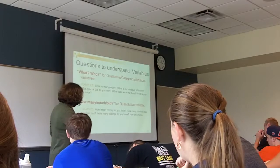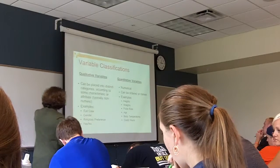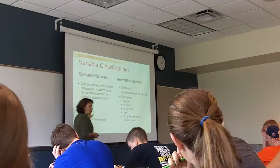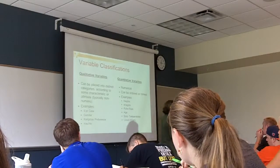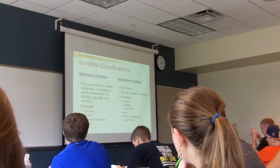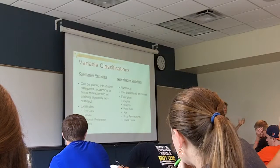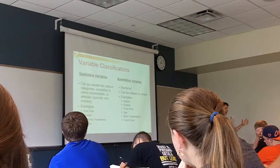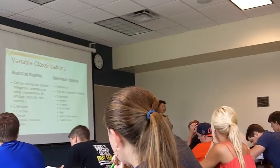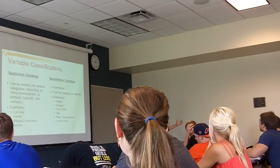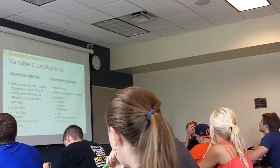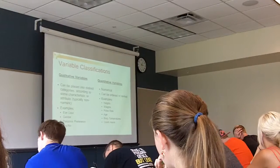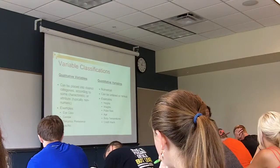Let's go through that. Qualitative data we cannot count mathematically. We can only put it into a category. For example, category of female, category of male, category of political participation like Democrats or Republicans. So these are categories. Other examples can be eye color, or answers like yes or no.